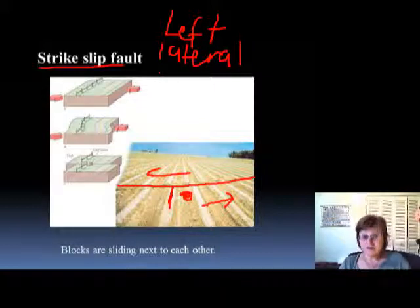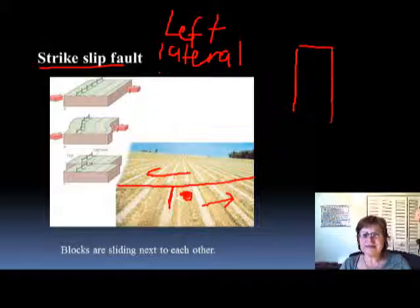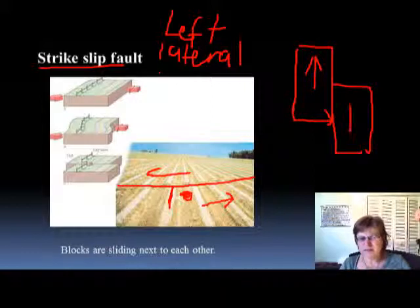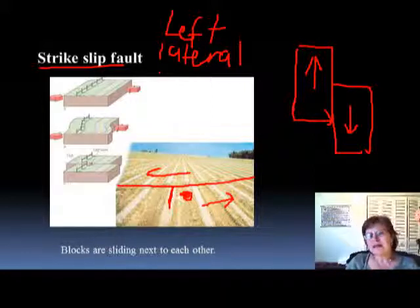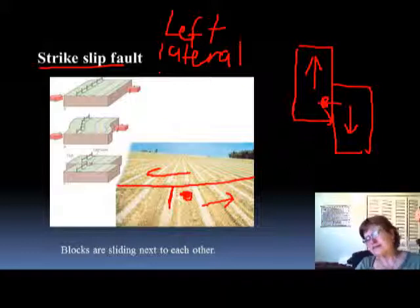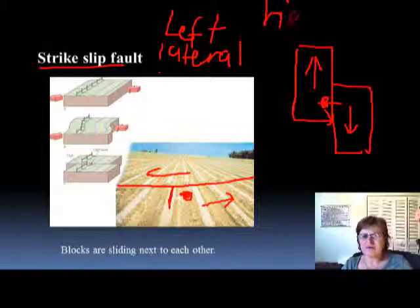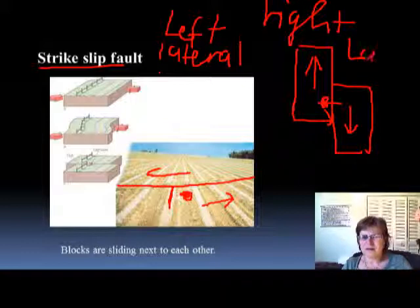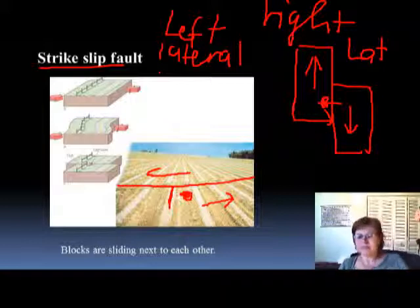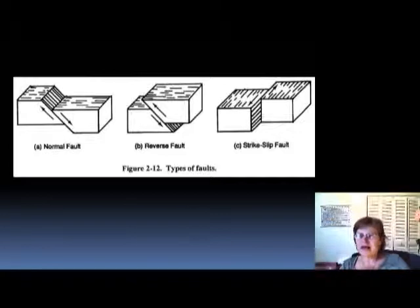On the other hand, if this block goes this way and the other one goes that way — you're standing on this block and you look at which way the other one moves. You can see the other one is going to the right, so this here is a right-lateral strike-slip fault.